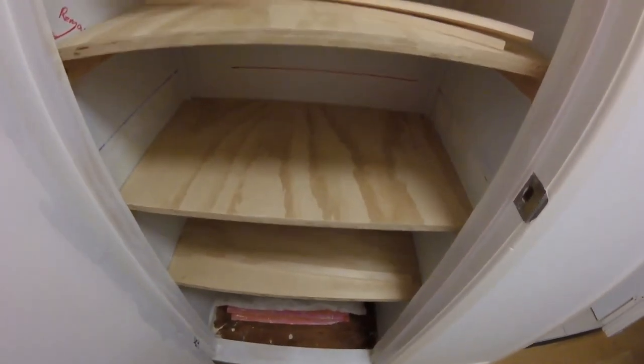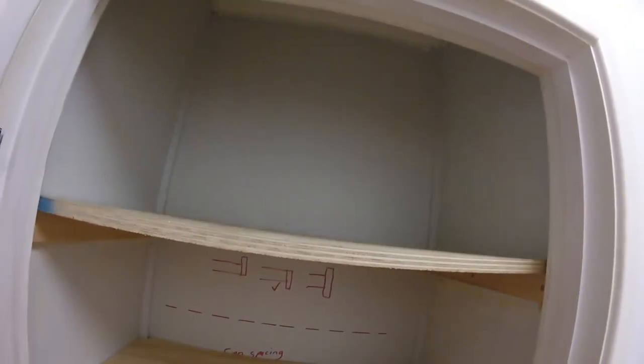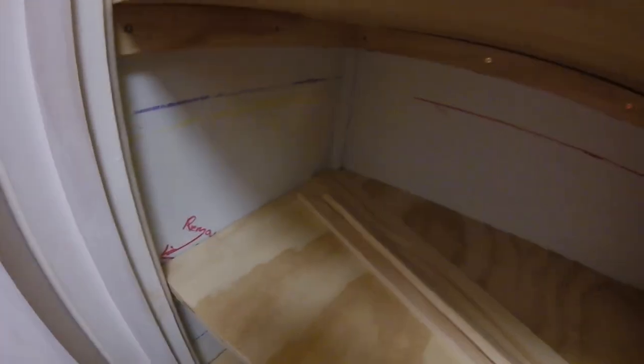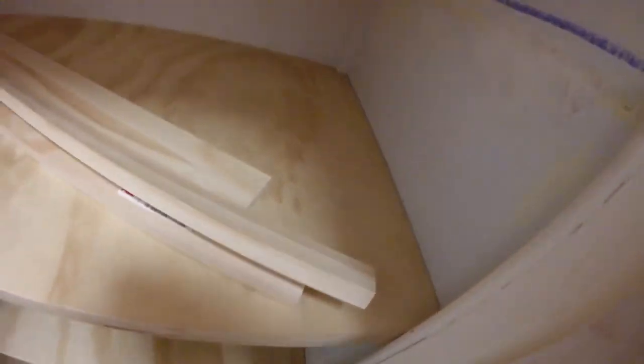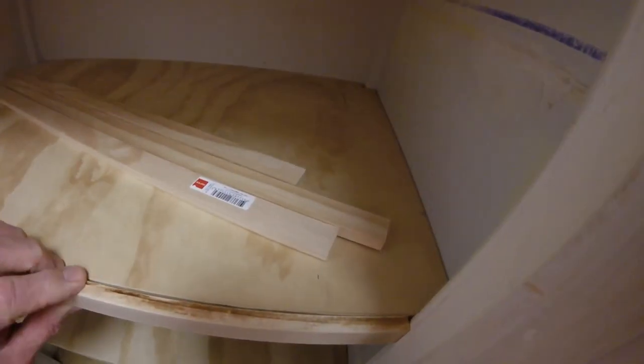Here I have cut out all five shelves and are now positioning them for a dry fit. I have also cut out five 12mm wide cover strips which will be glued and nailed to the front of each shelf on final assembly.